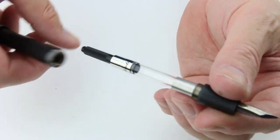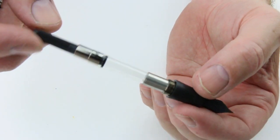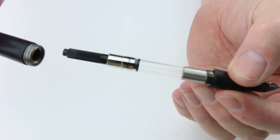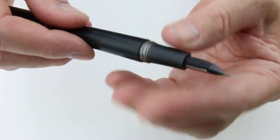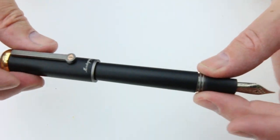That section unscrews from the barrel of the pen and included with the pen is an ink converter. So if you want to use bottled inks, you have that option. There's also the standard international ink cartridges I showed you earlier.